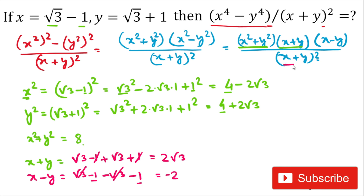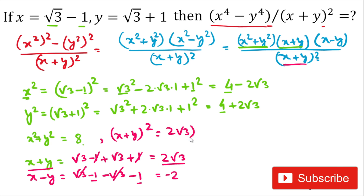Now we calculate (x+y)². We have x+y = 2√3, so (2√3)² = 4 times 3 = 12. Therefore (x+y)² = 12.